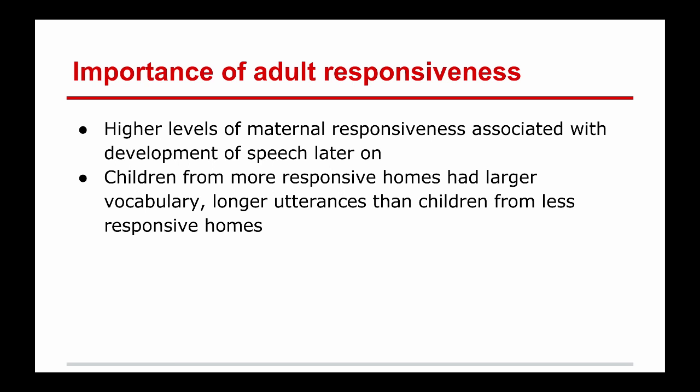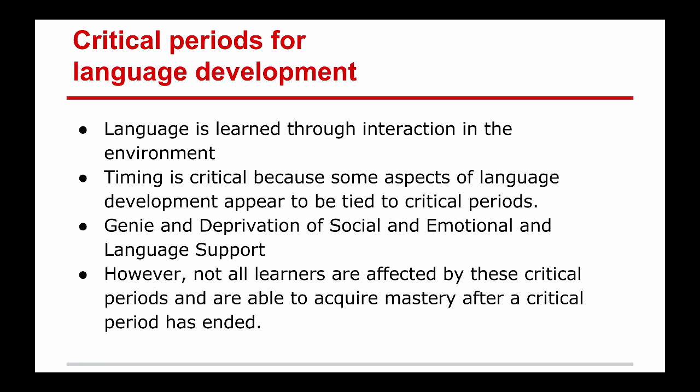Children from more responsive homes have larger vocabularies. If parents interact and respond with the child, there's a stronger connection to vocabulary acquisition. There is also a much higher response and utterance rate from children in responsive homes compared to less responsive ones. The basic key component is: if parents and adults are responsive with children, it is beneficial for the child's long-term critical language development.